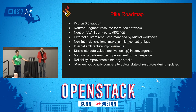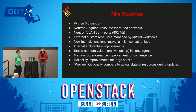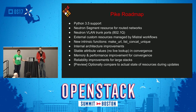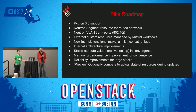The roadmap for Pike has a lot of good stuff. Python 3.5 support is more or less done — something all projects are working on this cycle. The Neutron segment resource has landed so you can use routed networks if that's your thing. Neutron VLAN trunk ports for 802.1Q on Nova servers — this is implemented in Neutron, there was no Heat resource for it, it's currently in review and should have no trouble landing.